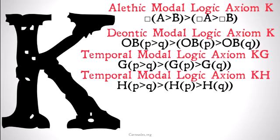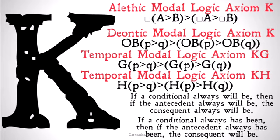We're going to take our strong tense modifiers, G and H, and basically do the same thing. It will always be the case that P implies Q, implies that if it will always be the case that P, then it will always be the case that Q. The same goes for has always been. If a conditional always will be, then if the antecedent always will be, then the consequent always will be. And if a conditional always has been, then if the antecedent has always been, then the consequent has always been.